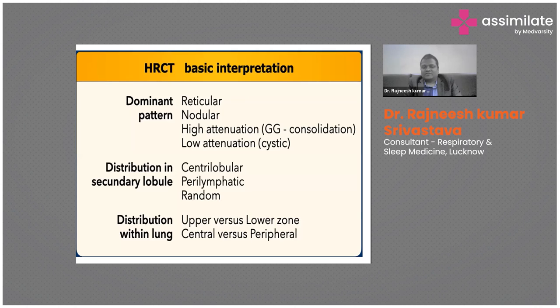On CT there may be a dominant pattern of reticulation, nodulation, high attenuation such as consolidation, or low attenuation such as cysts. Distribution can be centrilobular or perilymphatic or random, and may be upper zone or lower zone predominant. This zonal distribution significantly affects the diagnosis.